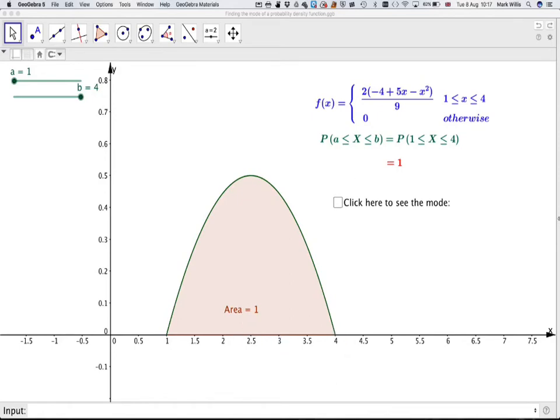You can move the sliders if you want in order to get different probabilities, so that's the probability of being between 2 and 4 in this distribution. And the mode is obviously going to be the corner of this point here...